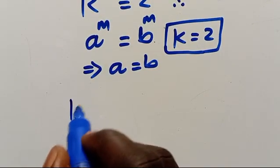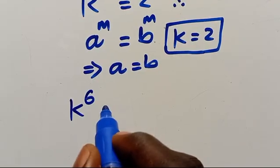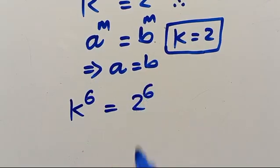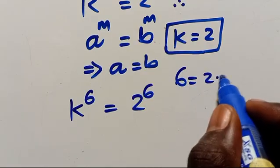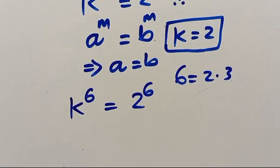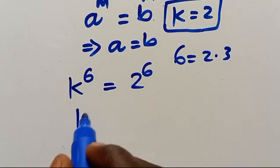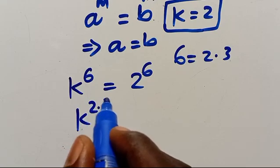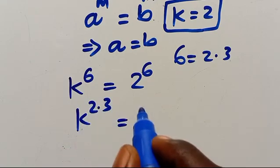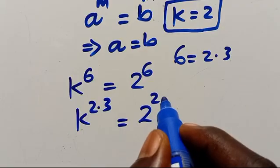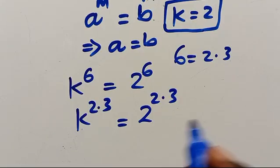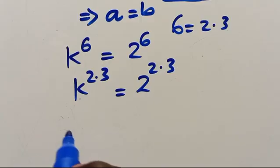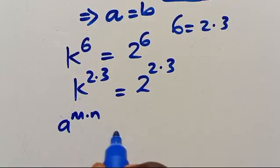We have k to the power of 6 equals 2 to the power of 6. We can write 6 as 2 times 3, so we have k to the power of 2 times 3.